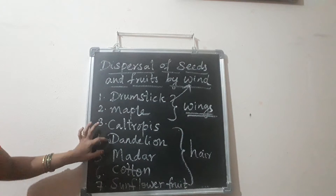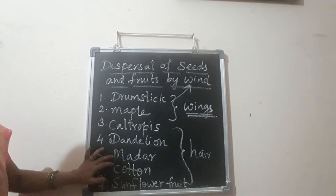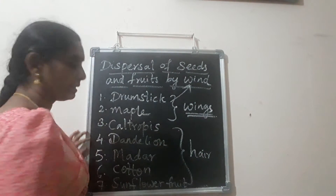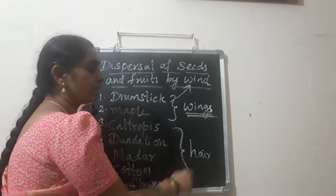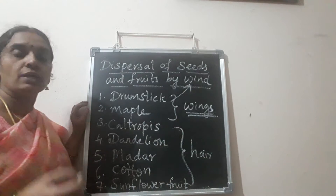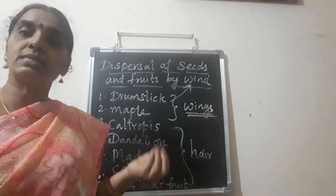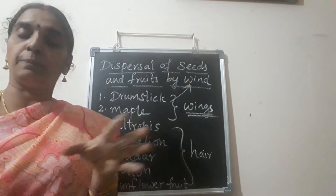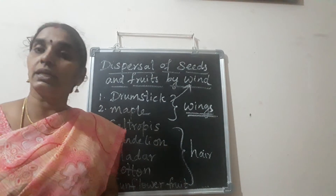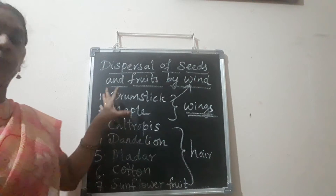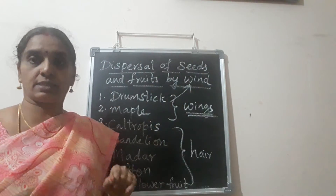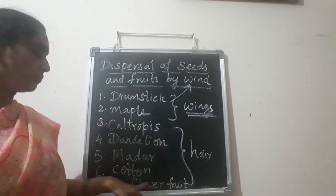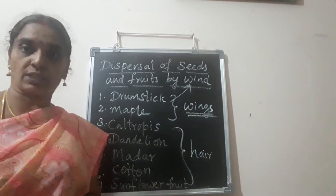The seeds of caltropis, dandelion, madar, cotton, and the sunflower fruit contain hair-like structures around them which are very lightweight and help the seeds to fly high up in the air. This allows them to move from one place to another and, under favorable conditions, germinate into a new plant. These are adaptive structures developed by the plants to enable wind dispersal.